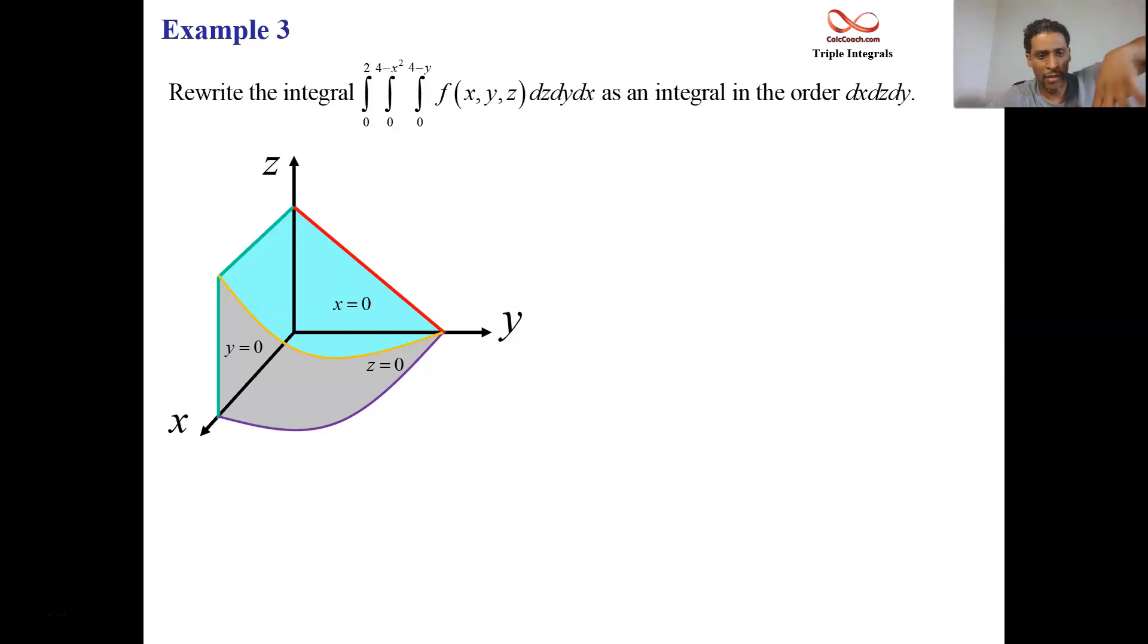And then the other function is y equals 4 minus x squared. After you integrate out z, you project onto the xy plane. Y equals 4 minus x squared is a parabola that hits at 4 and opens downward. It hits the x axis at 2. And negative 2, but we only care about this first part. And so there we have it.